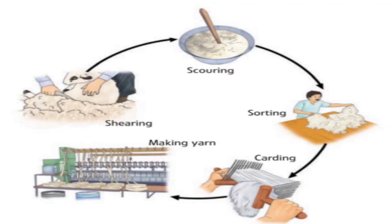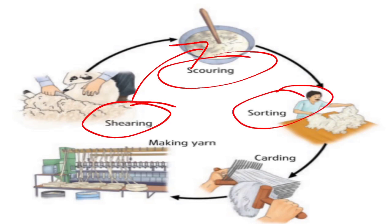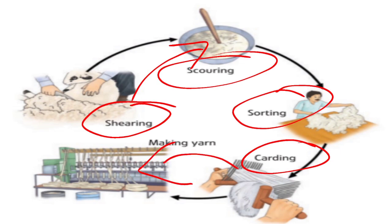Here you can see and understand the process with the help of this diagram. The main steps are: shearing, washing or scouring, sorting, and carding — in which we straighten the fibers and remove the burr — and then making yarn with the help of instruments.